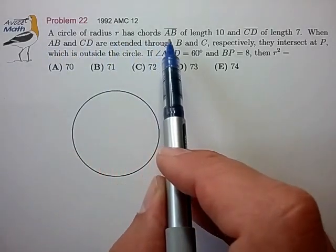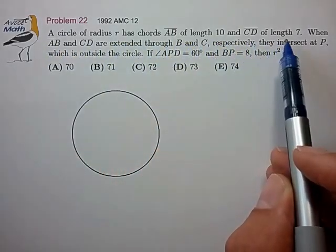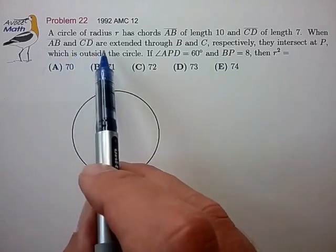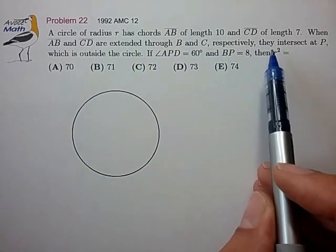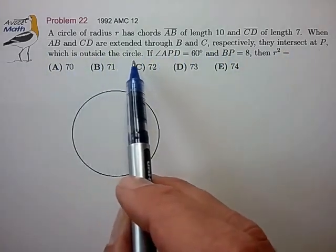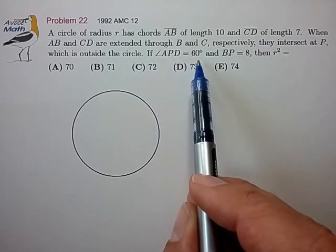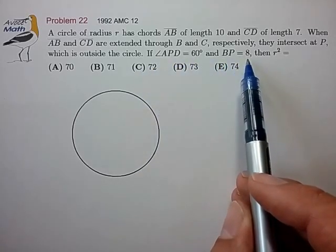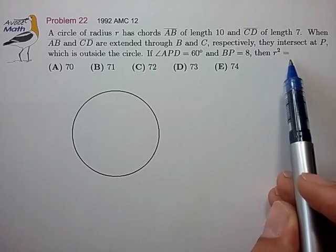A circle of radius R has chords AB of length 10 and CD of length 7. When AB and CD are extended through B and C, they intersect at P outside the circle. If angle APD is 60 degrees and BP is equal to 8, then R squared of the circle is equal to what?